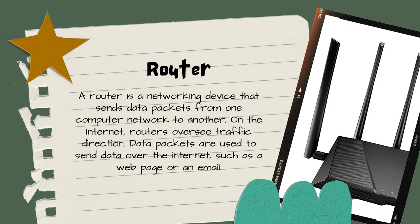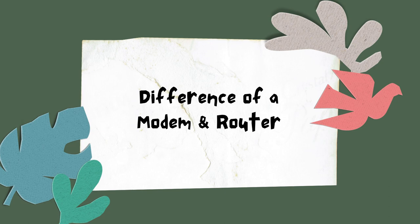Next is the router. So what is a router? A router is a device that interacts between the internet and the internet-connected devices in your home. It routes traffic between devices and the internet, as its name implies. A modem brings internet service into the home, and the router delivers the internet to the devices in your home via Wi-Fi or an Ethernet cable.